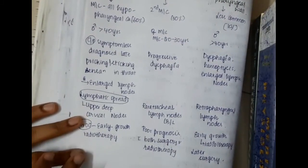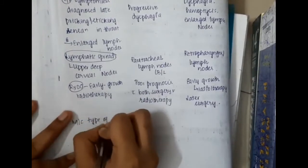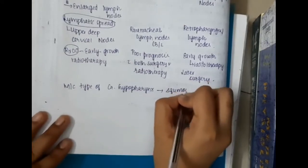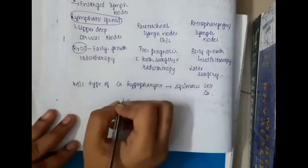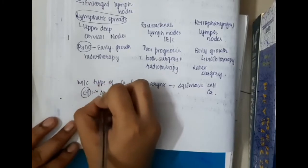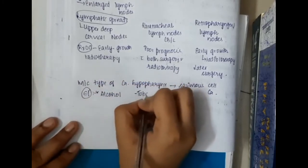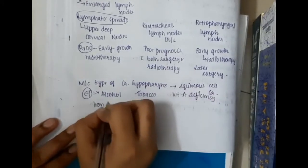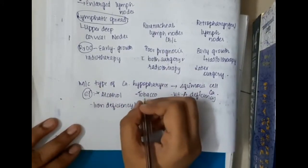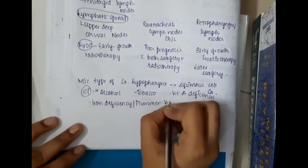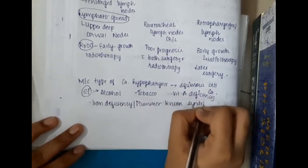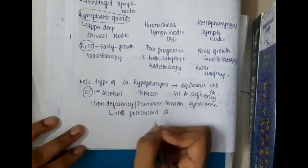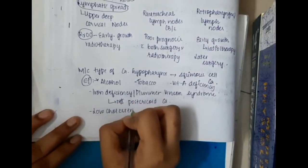If you see the next important thing, the most common type of carcinoma hypopharynx is squamous cell carcinoma. This iron deficiency or Plummer-Vincent syndrome is actually associated most importantly with post cricoid carcinoma. Then we also have low cholesterol levels.